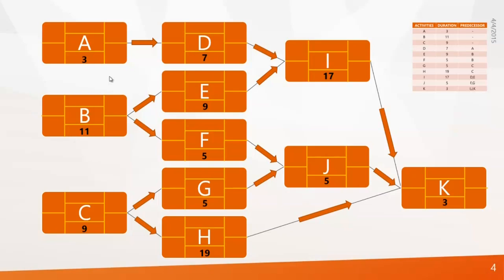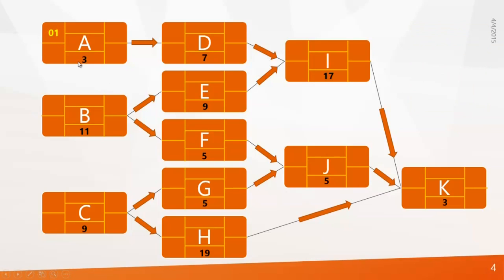Let's assume our project starts on day 1, so the early start of activity A is day 1. Since A, B, and C start simultaneously, the same date goes to B and C. Next we find the early finish of these activities. Activity A starts on day 1 and needs 3 days to complete, so it finishes on day 3. The equation is: early start plus duration minus 1 equals early finish. The same equation is followed for B and C.